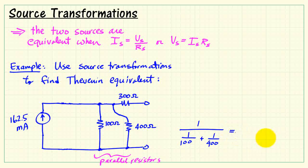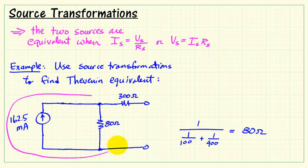We'll do the quick calculation over there, and we find a value of 80 Ohms. Now I'll go ahead and apply another source transformation taking us from the current source form back to the voltage source form.